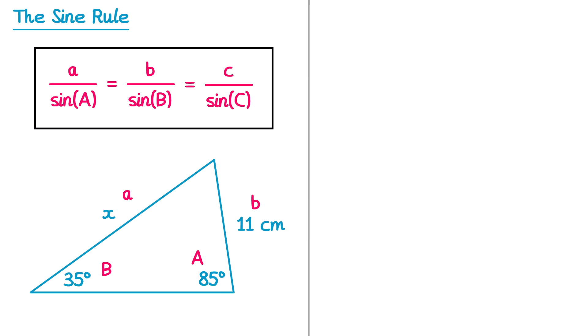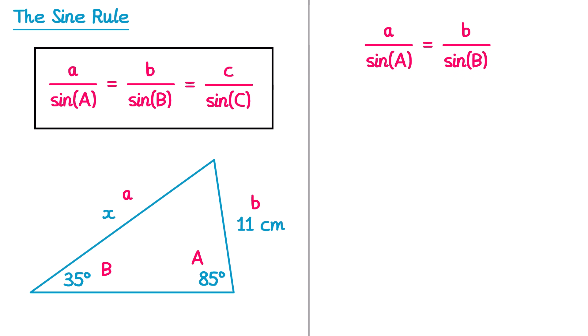We write out the sine rule: a over sine A equals b over sine B, then substitute in the numbers. Lowercase a is X (the side we're finding), divided by sine of 85. On the right we have 11 divided by sine of 35. We now have an equation to solve to find X.